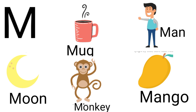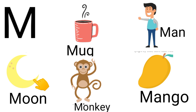Let's revise. M is for mug. M is for man. M is for moon. M is for monkey. M is for mango.